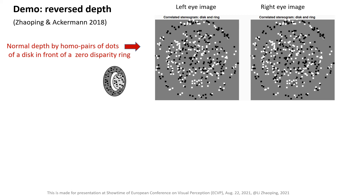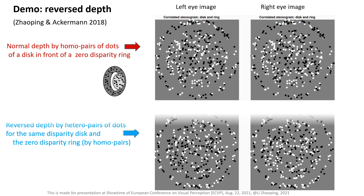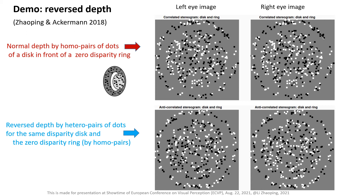To demonstrate this illusion, let's start with normal depth without this illusion using a random dot stereogram. Left eye image and right eye image — the binocular corresponding dot pairs are homo pairs, and this stereogram depicts a central disk in front of a surrounding ring. Try to free fuse these two images and you should see the disk at a different depth from the ring. In the bottom stereogram, the central disk has the same binocular disparity as in the top stereogram relative to the zero disparity ring. However, all the dot pairs for the disk are hadal pairs — a black dot in one eye corresponds to a white dot in the other eye. If you free fuse this bottom stereogram, you cannot see whether the disk is in front or behind the ring, because you usually do this free fusion in your central visual field.